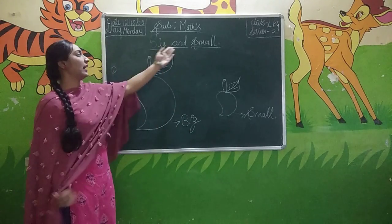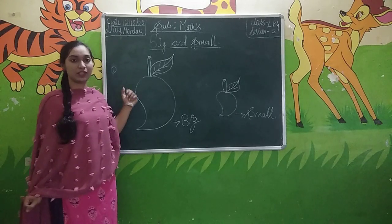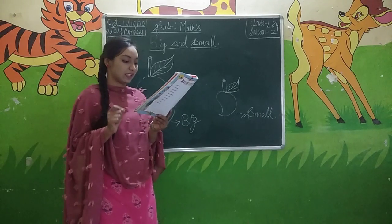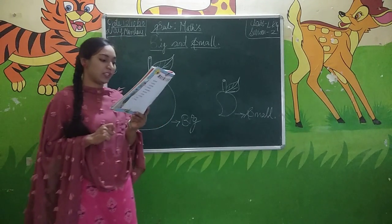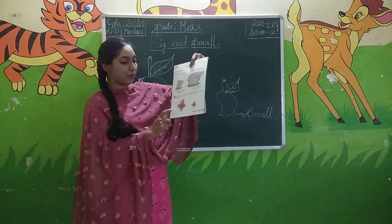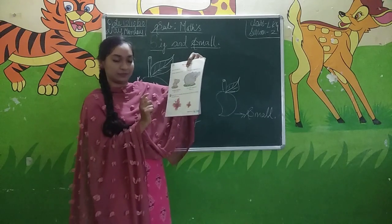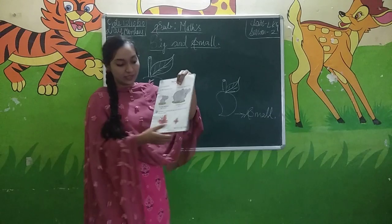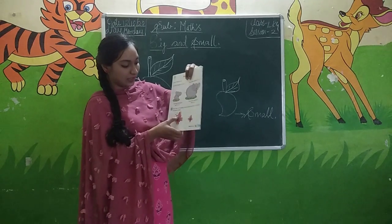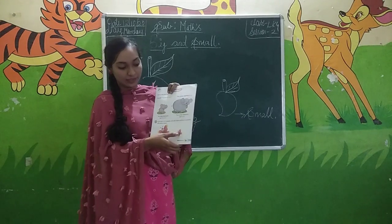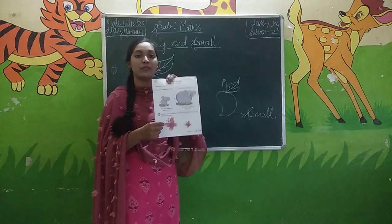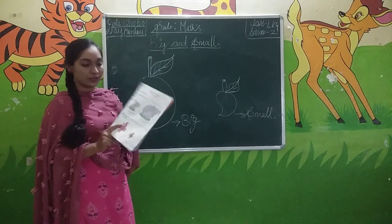Next, on page number 5, circle the small butterfly with red crayon and the big butterfly with yellow crayon. So here we have given two butterflies — one is big and one is small. We have to circle the small butterfly with the red color crayon, whereas the big butterfly we have to circle with the yellow color crayon. We understood this.